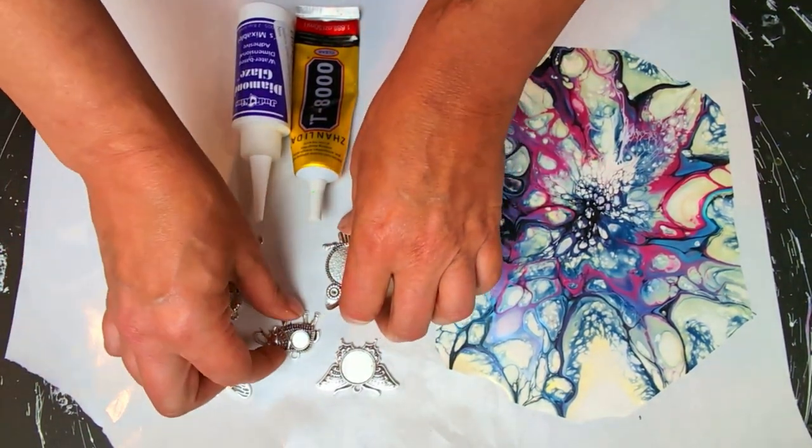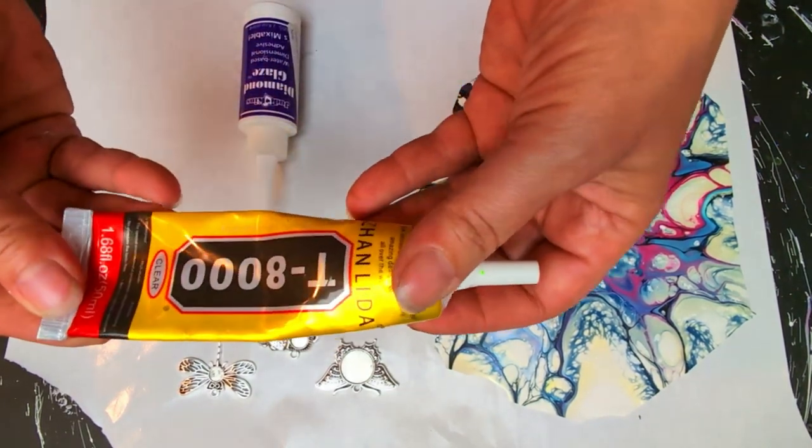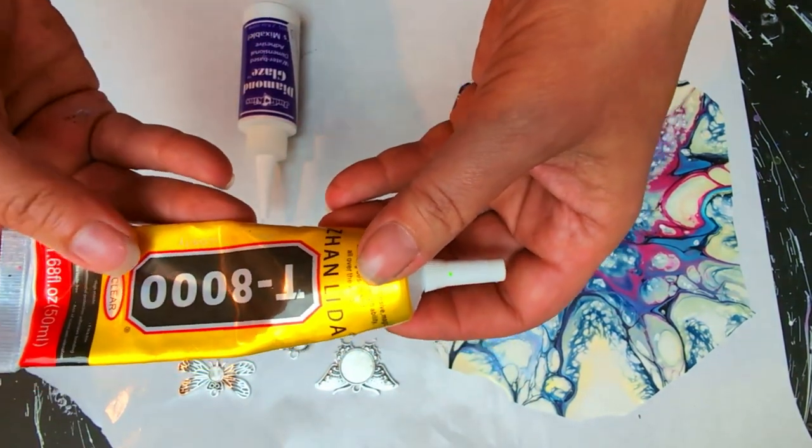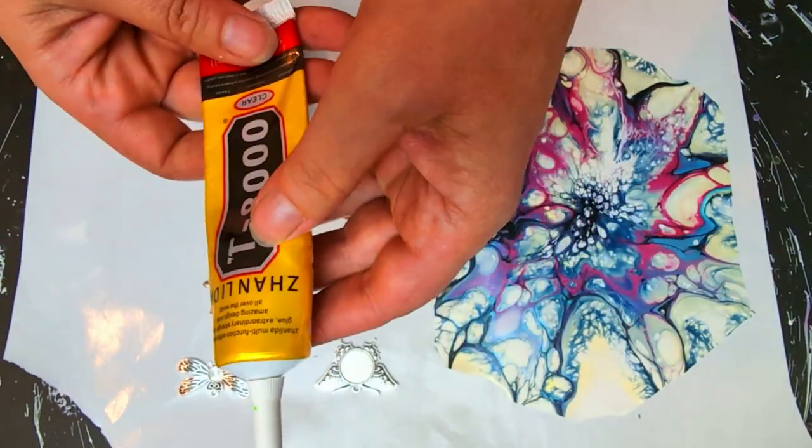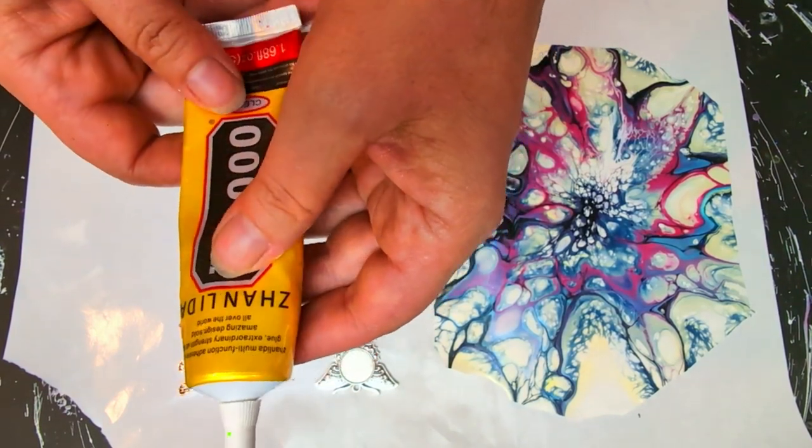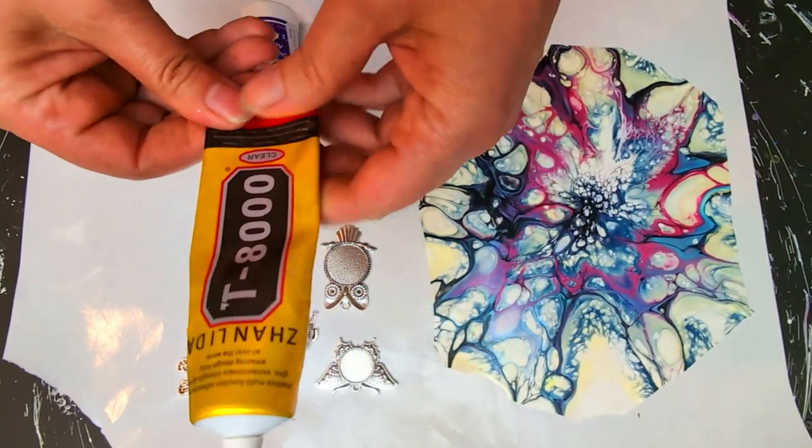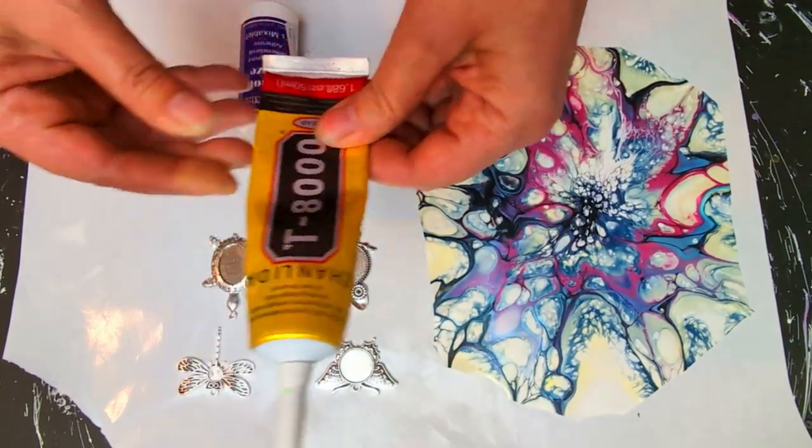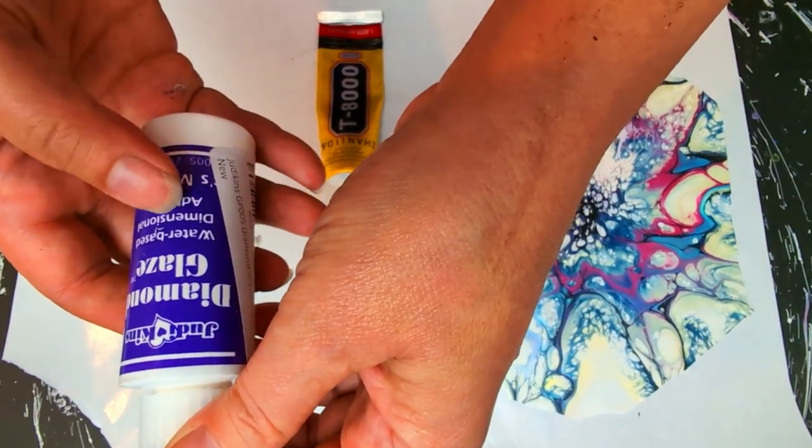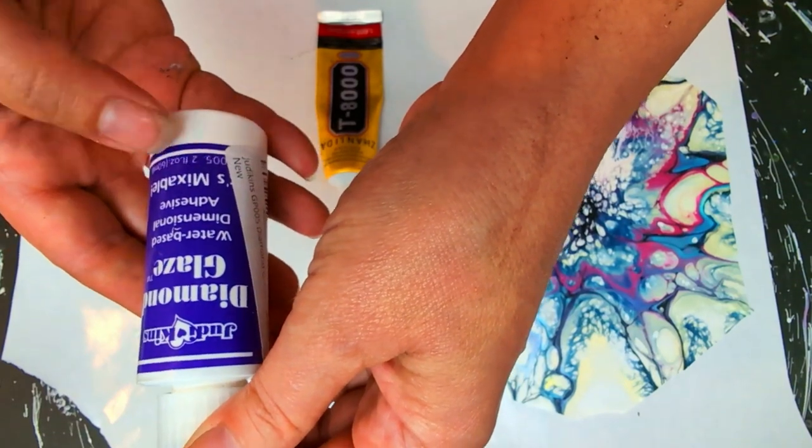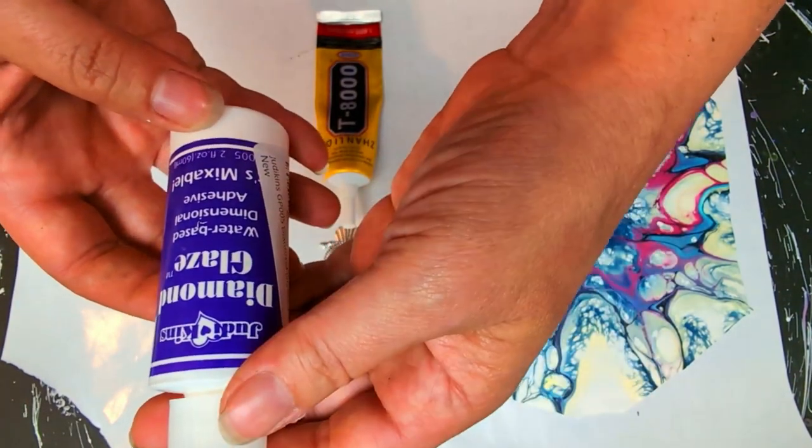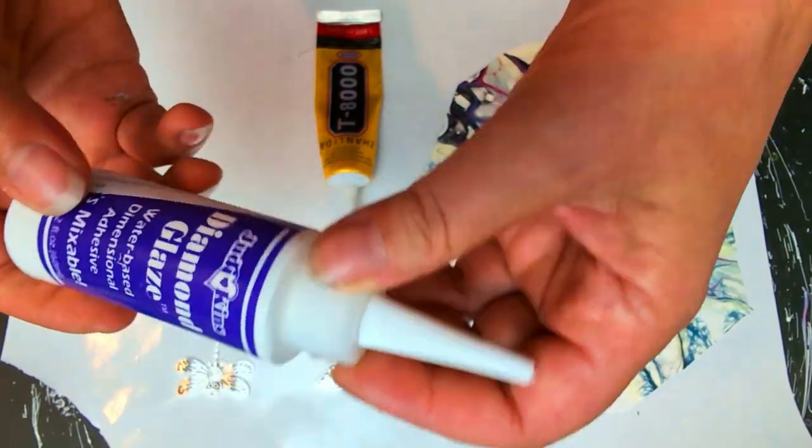You will also need some glue, some clear glue. This is T-8000. This is a good adhesive, very strong adhesive. And then you will also need some diamond glaze water-based dimensional adhesive. This is like a three-dimensional glue. It helps to make your jewelry pop.